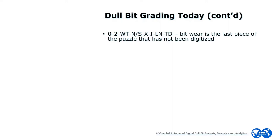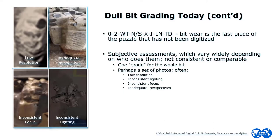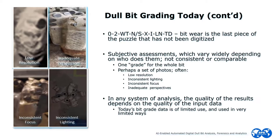It seems somewhat strange that the bit — which is really the pointy end of the spear when it comes to drilling, a critical component in the overall process — is the last piece of the drilling puzzle to be digitized. In addition to a somewhat unfriendly coding structure, the current system relies on individual human interpretation, which can vary widely depending on who does the grading. As well, one code is given for the entire bit, which can often have 40 or more individual cutters. Photos may or may not be available, but even when they are, they often suffer from low resolution, inconsistent lighting, poor focus, or perspectives that make it difficult to piece things together properly. In short, trying to decipher how to make improvements using today's bit wear data is a laborious and often frustrating process, and today's bit wear data is of limited use and generally used in very limited ways.